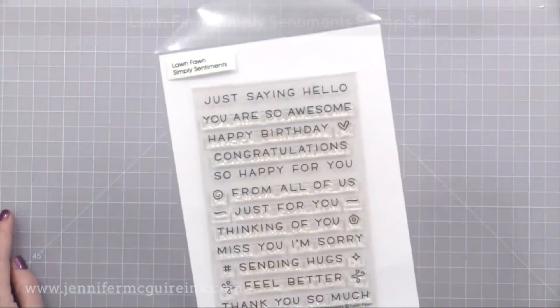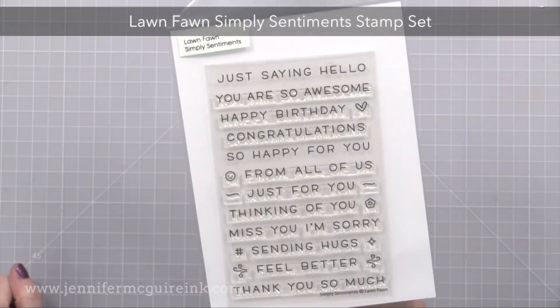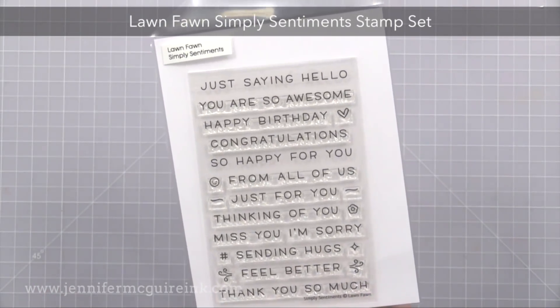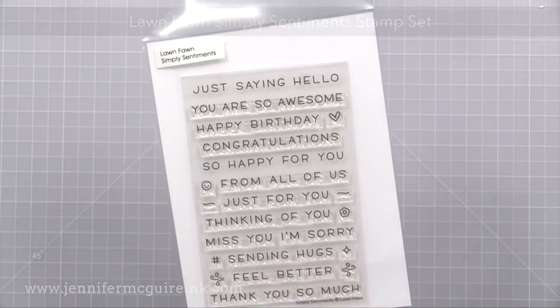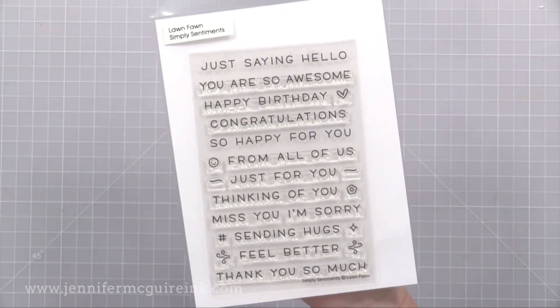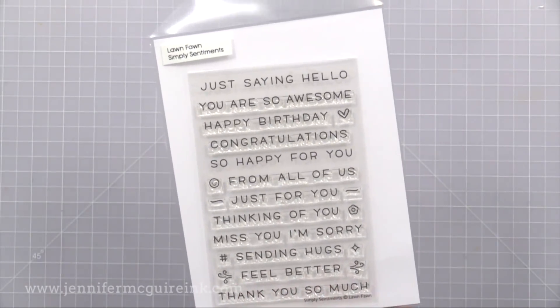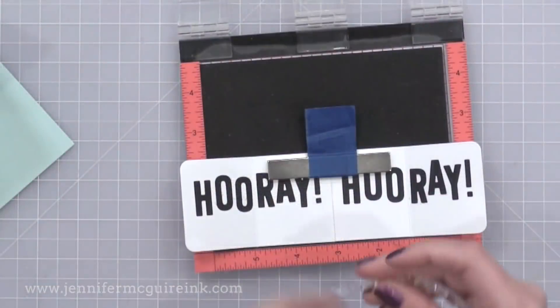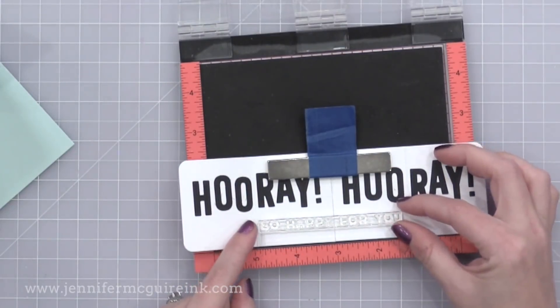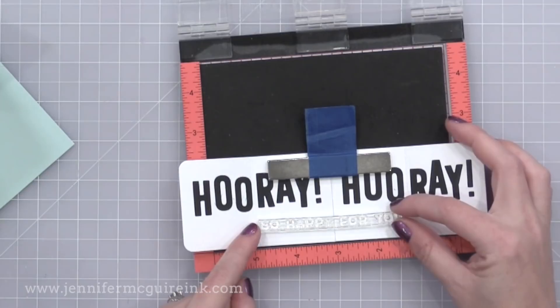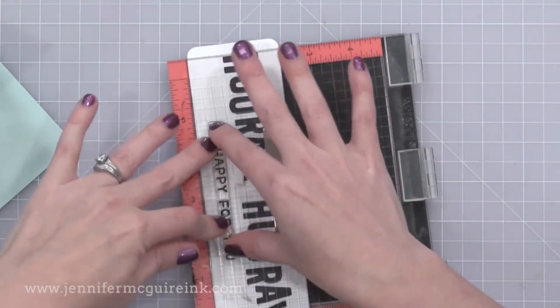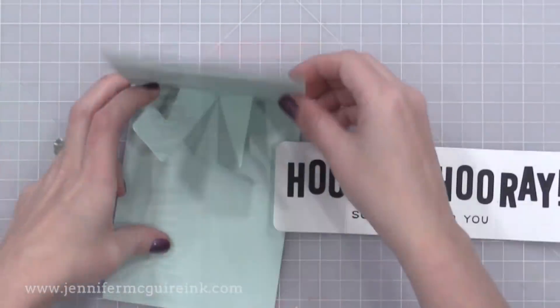Next I want to add a sentiment onto this. A little sentiment to go underneath it. This is the Lawn Fawn Simply Sentiments stamp set. This is another new stamp set and I like how the letters are spaced out. There are lots of sentiments on here. Perfect for sentiment strips on cards. I like that it includes feel better and sending hugs. I decided to use So Happy For You so I'm placing this in my MISTI simply because I didn't want to mess up at this point and I'm stamping it with black ink right along the bottom of the banner.